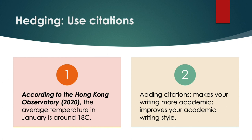However, now you are saying who the third party is. Look at this example: According to the Hong Kong Observatory 2020, the average temperature in January is around 18 degrees centigrade. Now we have a reliable organisation — the Hong Kong Observatory — providing evidence on the temperature. It's hard to disagree with that. Adding citations will make your writing more academic and improve your academic style. Look at the student notes for more information on hedging and for adding citations.